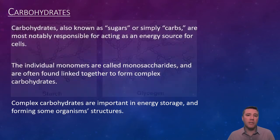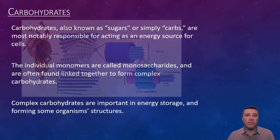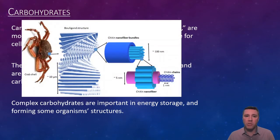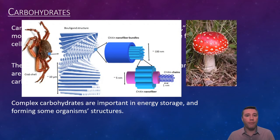In the exoskeletons of arthropods, like insects, spiders, and crustaceans, as well as the cell walls of fungi, bundles of carbohydrate chains called chitin provide for structure, strength, and protection.